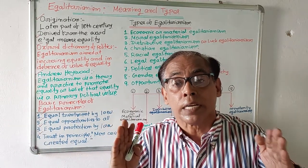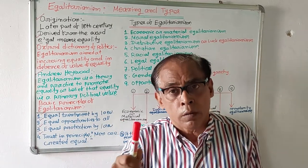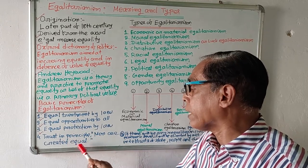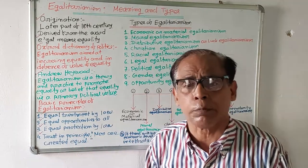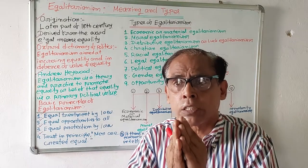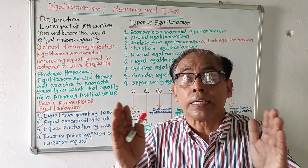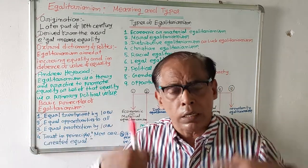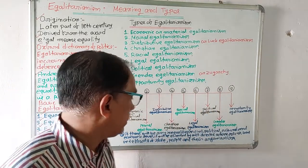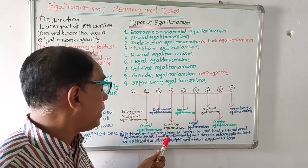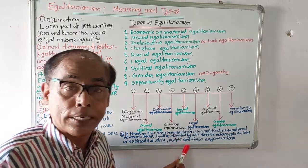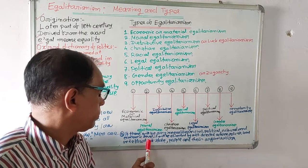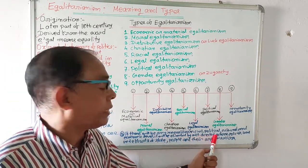The third pillar is equal protection by law — law will protect all and make no discrimination at the time of protection. The fourth principle is that egalitarianism trusts in the principle that people are created equal — all people are equal.